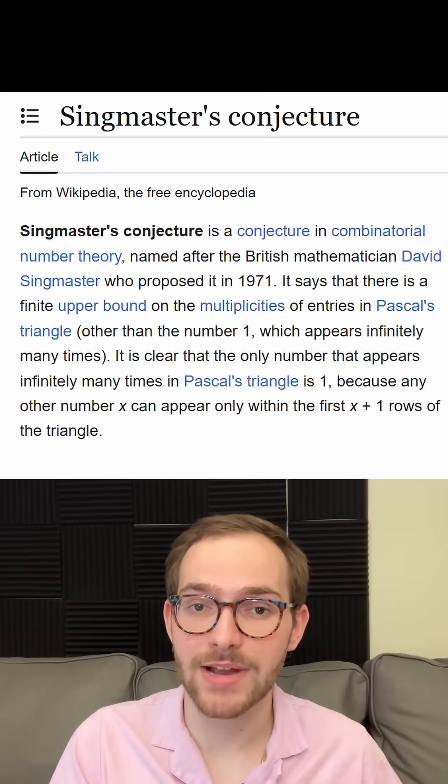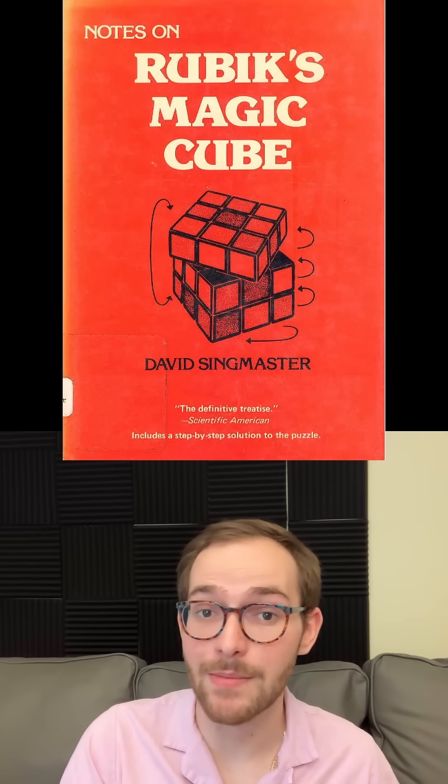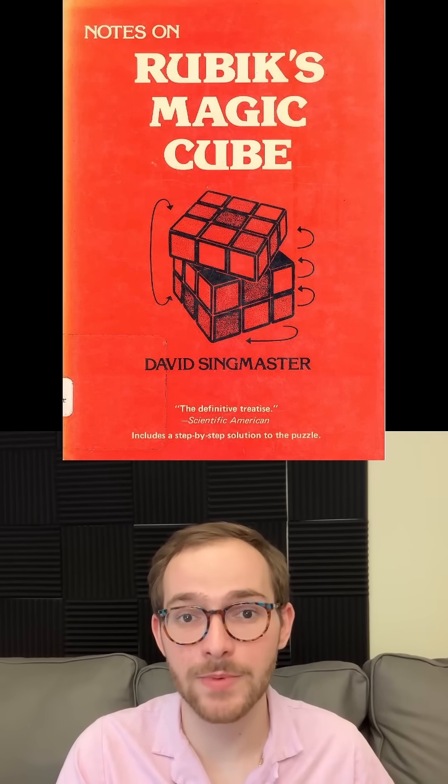Singmaster's conjecture is named after David Singmaster, who was the first person to systematically describe how to solve a Rubik's Cube, and his notation remains popular in the cubing community today.